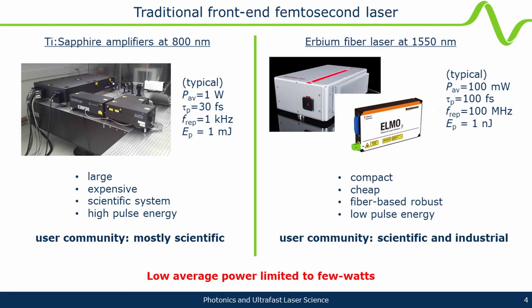Depending on whether you're on the scientific or industrial side, there are typically two types of systems. Some are based on titanium sapphire amplifiers — mostly for applications needing high single-pulse energy — which are relatively large, expensive, and not necessarily super robust or deployed in industrial applications. On the other hand, there are very compact, relatively inexpensive erbium fiber lasers that drive typical commercial systems, which are compact and target quite different application ranges.